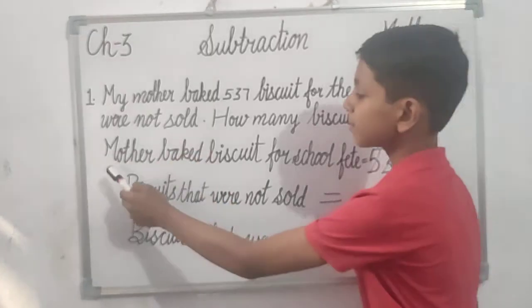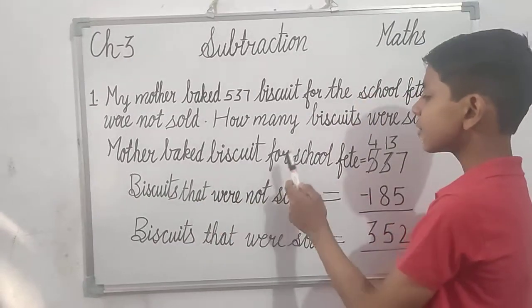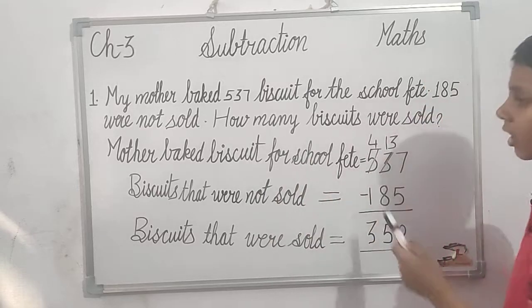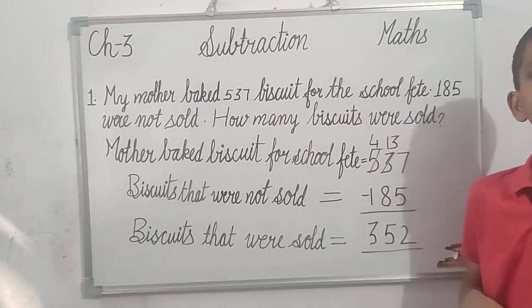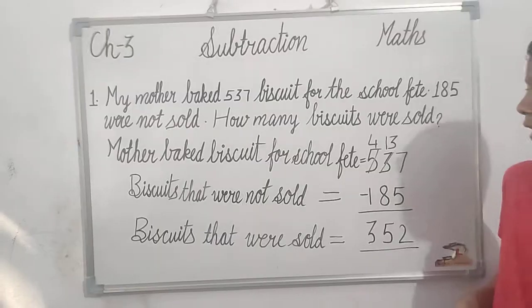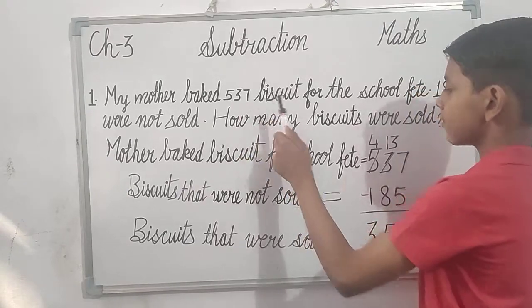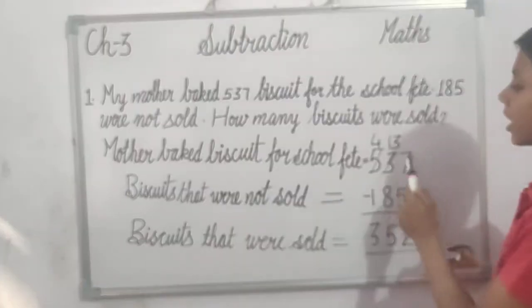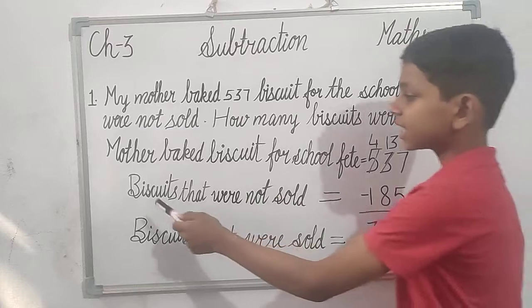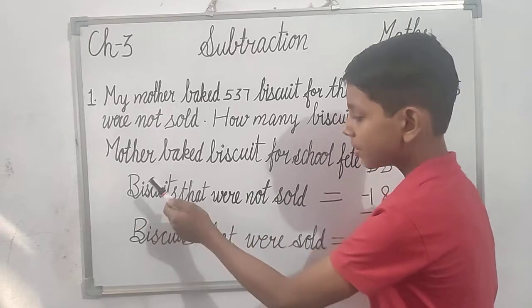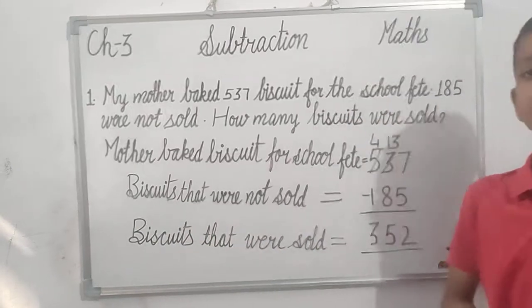So the first statement is: Mother made biscuits for school feet — this is 527. Second statement is: Biscuits that were not sold — 185 biscuits were not sold.